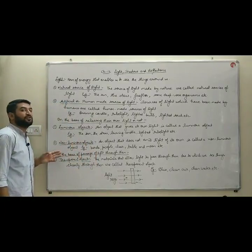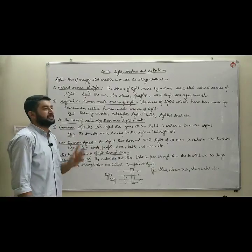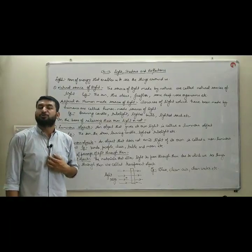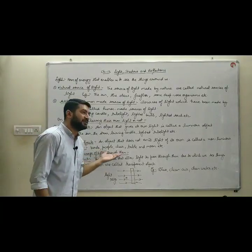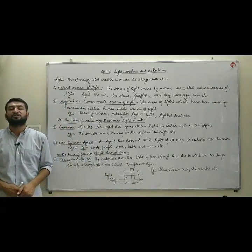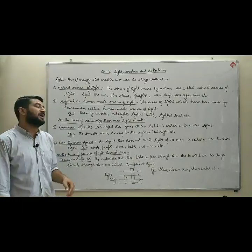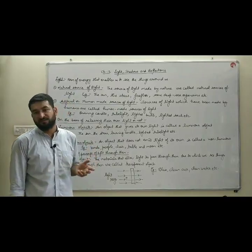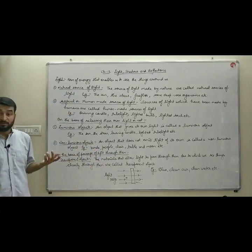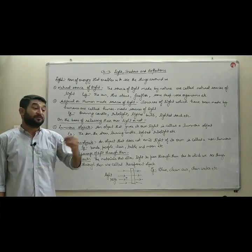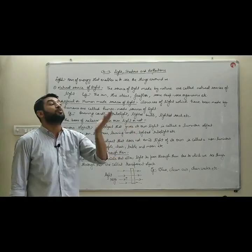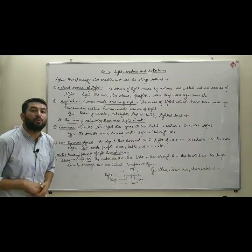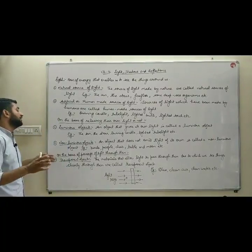The opposite of luminous objects are non-luminous objects. The objects which do not emit their own light are known as non-luminous objects. For example, animals, people, birds, chairs, tables, and the moon — they do not have their own light. They are visible to us because light falling on them reflects into our eyes. That is the only reason they are visible. They do not release their own light, which is why they are referred to as non-luminous.